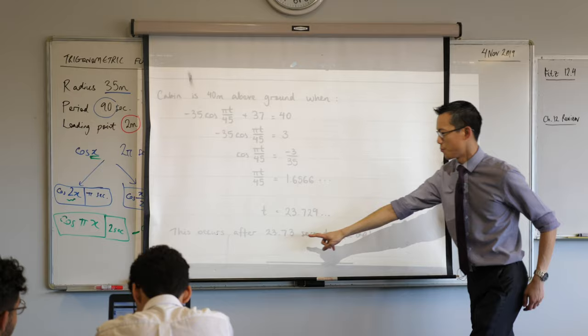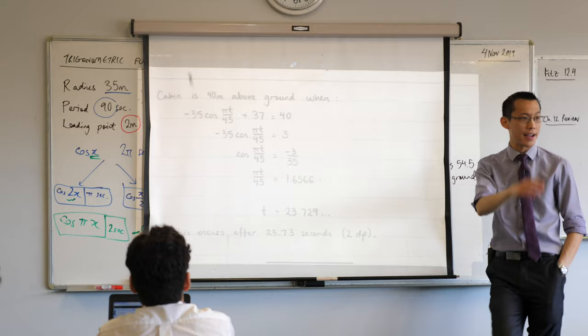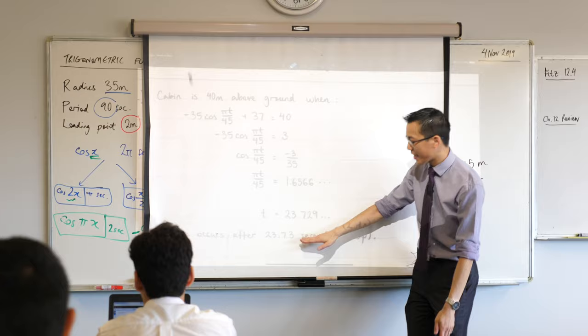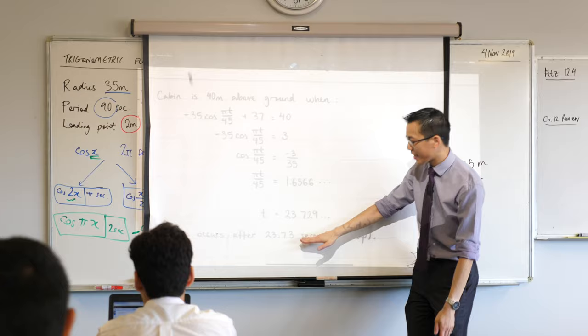Here's the answer we're going for, but actually all this stuff is the stuff that really matters. In fact, I could just as equally give you a question which says, show that the cabin is 40 meters above the ground at this time. Like, I might give you that time, right? In that case, I'm looking for all of this. This is the stuff that actually matters, okay? Because it's your reasoning and it shows that I know what I'm doing and how to solve it, okay?